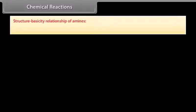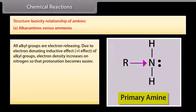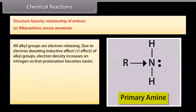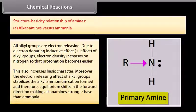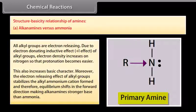Structure-basicity relationship — Alkanamines versus ammonia: All alkyl groups are electron-releasing. Due to the positive inductive effect (+I effect) of alkyl groups, electron density increases on nitrogen, making protonation easier and increasing basic character. The electron-releasing effect of alkyl groups also stabilizes the alkylammonium cation formed, shifting equilibrium in the forward direction and making alkanamines stronger bases than ammonia.